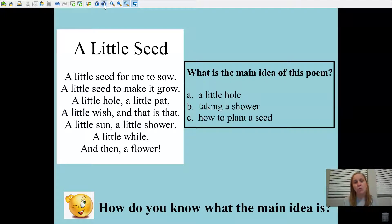C. How to plant a seed. Hmm. It tells me to make a hole. To pat it. To give it sun. To give it water. And then there's a flower. All the little details tell me about how to plant a seed. So I would agree that C is the right answer.